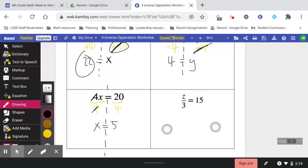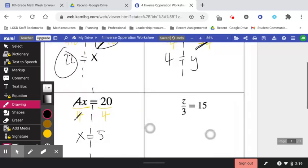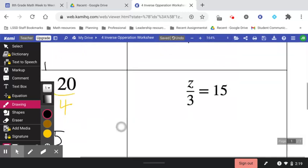What if you're dividing the variable? Well, let's look at this example here. So just like I said, fractions and division, turns out they're basically the same thing. This says, it looks like a fraction, but this says z divided by 3 is 15.